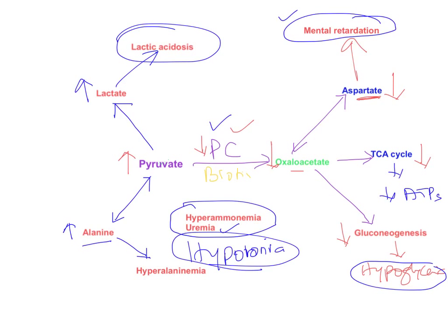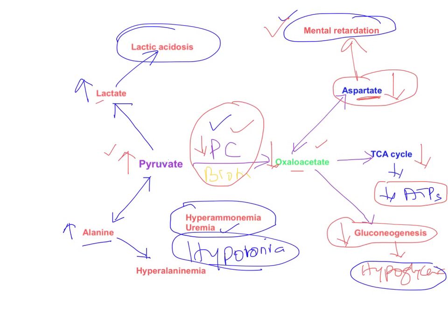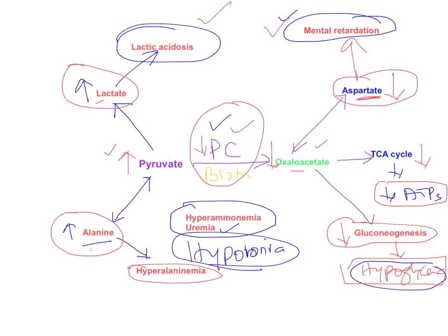To recap: decreased pyruvate carboxylase → elevated pyruvate and decreased oxaloacetate → decreased aspartate (excitatory neurotransmitter) causing mental retardation → decreased TCA cycle causing decreased ATP and lack of energy → decreased gluconeogenesis causing hypoglycemia → elevated pyruvate forming lactate causing lactic acidosis and metabolic acidosis → elevated pyruvate forming alanine causing hyperalaninemia → hyperammonemia, increased urea, and hypotonia in skeletal muscle.